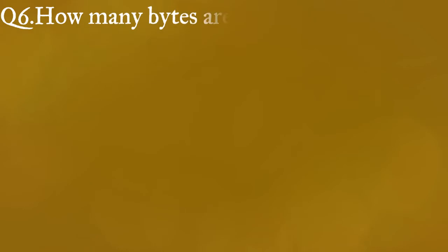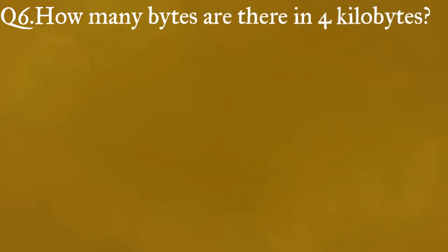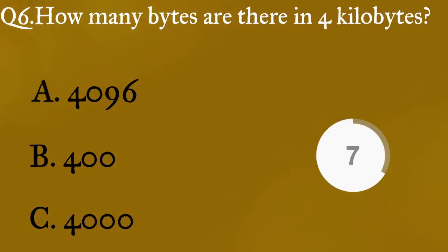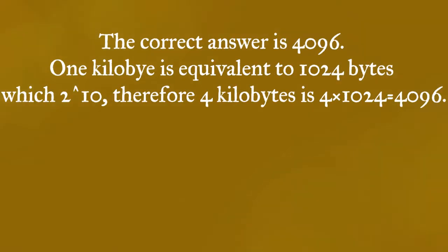Question six: how many bytes are there in four kilobytes? A) 4096, B) 400, C) 4000. The correct answer is 4096. One kilobyte is equivalent to 1024 bytes, which is 2 raised to the power of 10. Therefore, 4 kilobytes is 4 times 1024, which equals 4096.